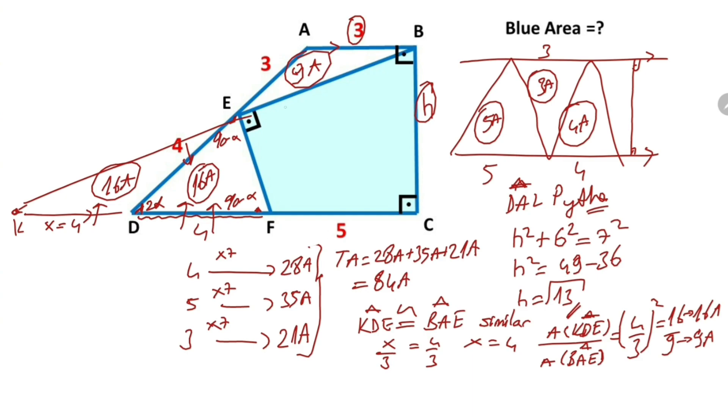The area of triangle DEF is 16a. That means if we subtract 16a and 9a from the 84a, we get the blue shaded area. So the blue shaded area must equal 59a.